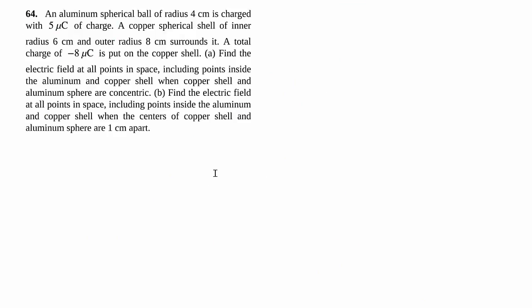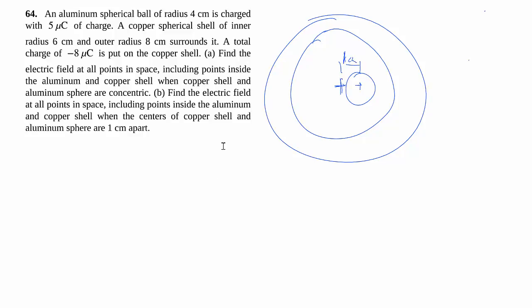Part B we'll do kind of qualitatively, because what we have here is we have a spherical shell on the outside, but the sphere is offset by 1 centimeter. But here's the funny thing here, because of this positive charge being off center, the charges that are in the shell will rearrange themselves to be a little more dense on this side than the other side, because they want to be closer to the positive charge here.